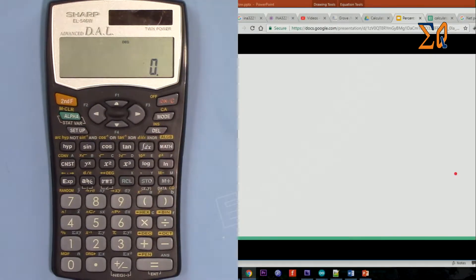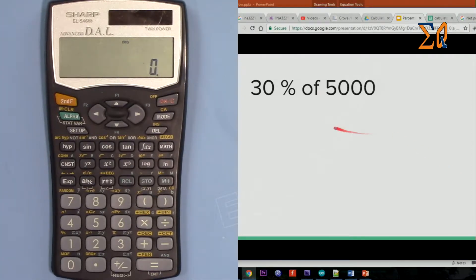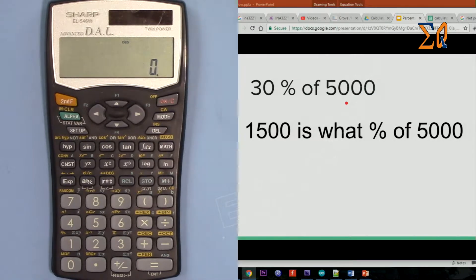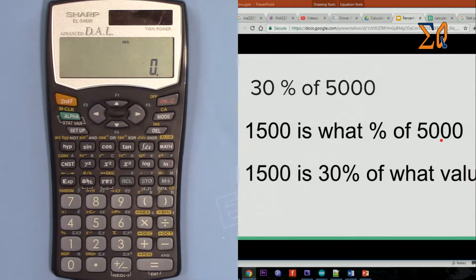So the first basic question is 30% of 5000. The other way will be 1500 is what percent of 5000, and the third way is 1500 is 30% of what value.